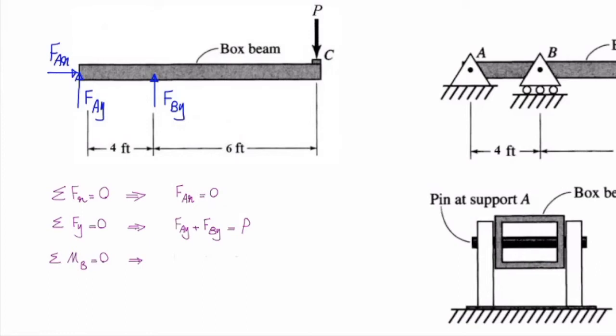In that case FAy doesn't have any moment because the arm is zero. So I will say sum of the moments about B is equal to zero. How much is the moment caused by this force FAy? The moment is force times arm, perpendicular distance of force from the point of interest. How much is that distance here? Four.